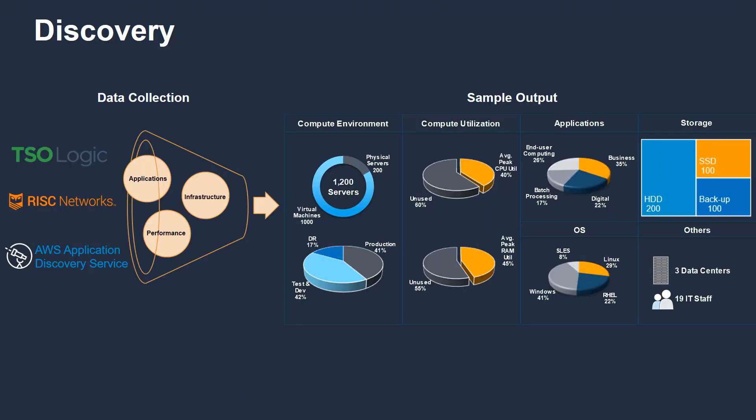In any large-scale migration program, at the initial stage, you do something called a discovery, where you either manually or using some tools like TSO Logic, Risk Network, or AWS Application Discovery Service, you try to understand your application portfolio along with your infrastructure.